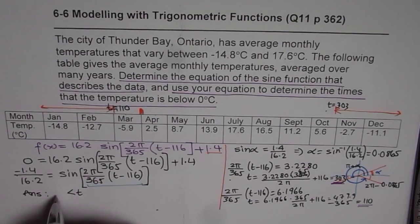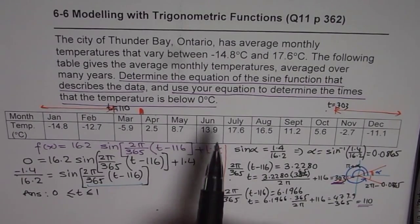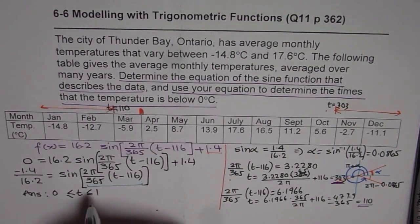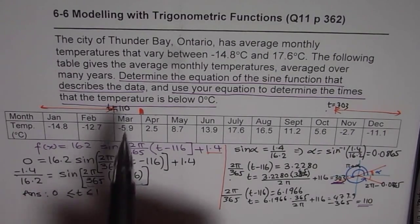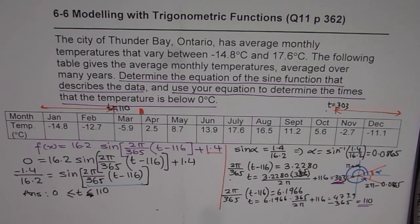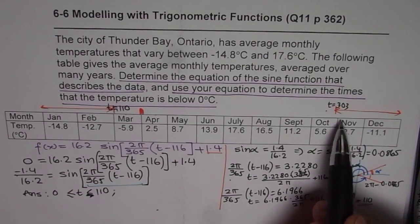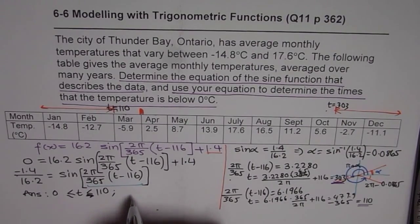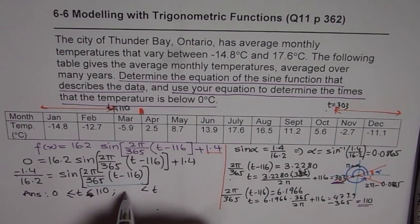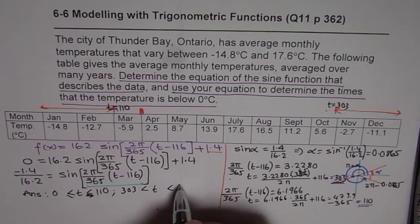So we say t is greater than or equal to 0 and less than or equal to. So it says, use your equation to determine the times that the temperature is below 0. So we can say below 0, so 110. So let's remove that, below 0. So 110, this is one interval.